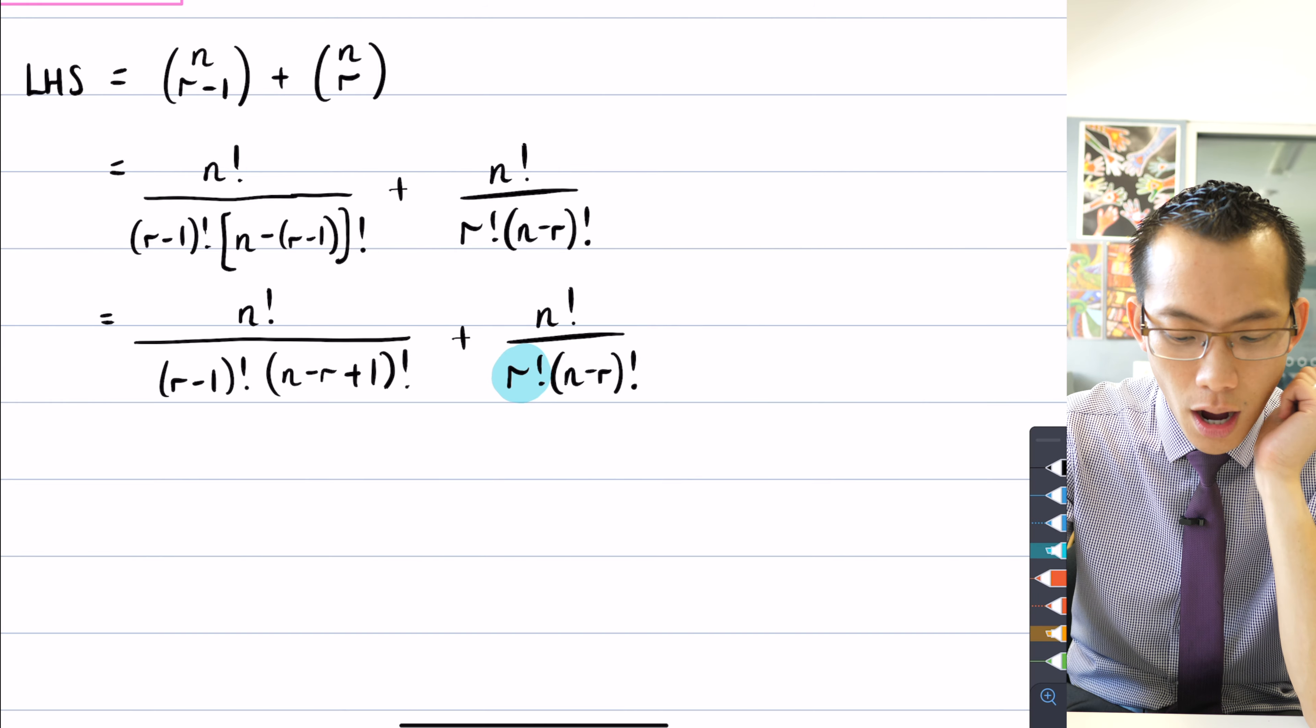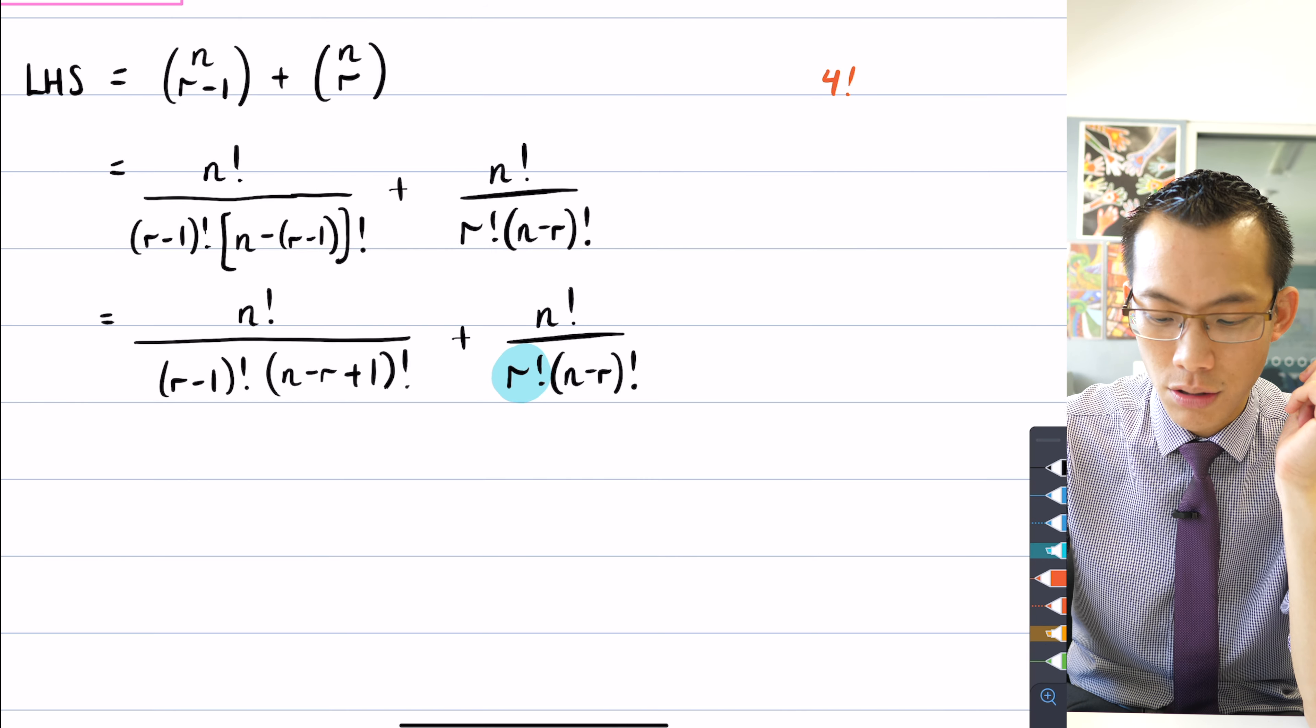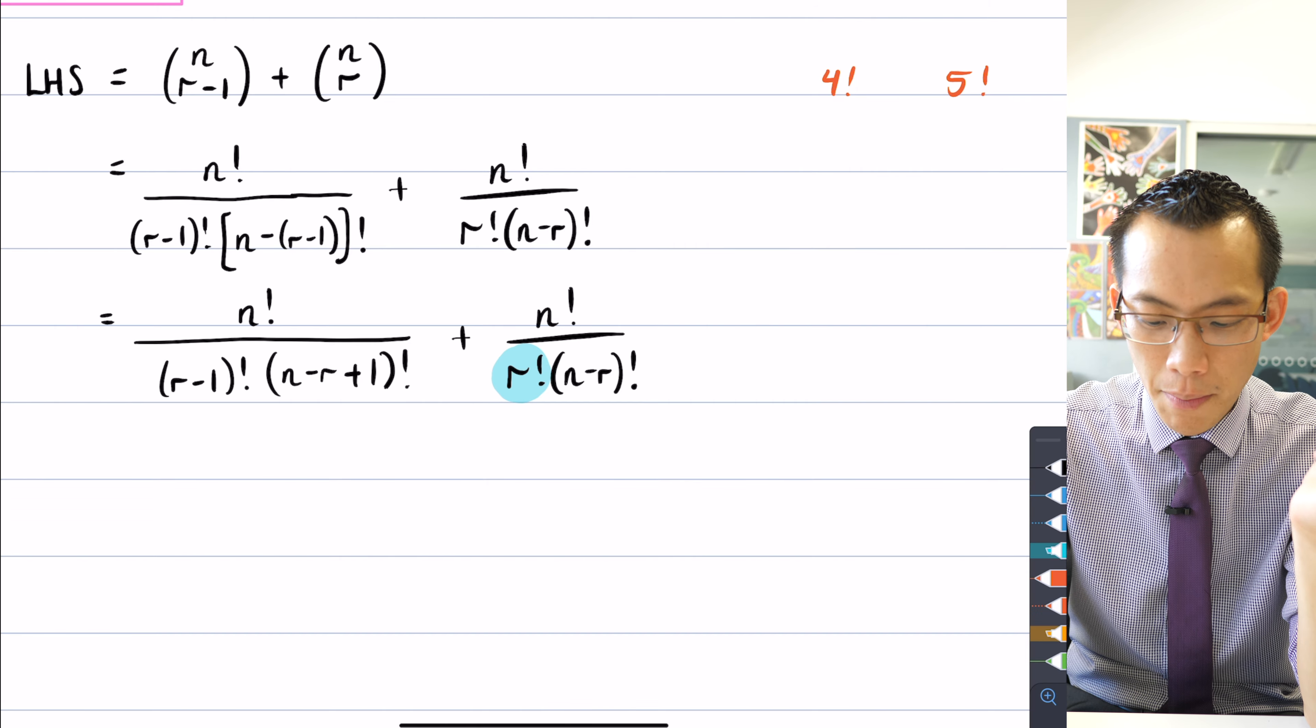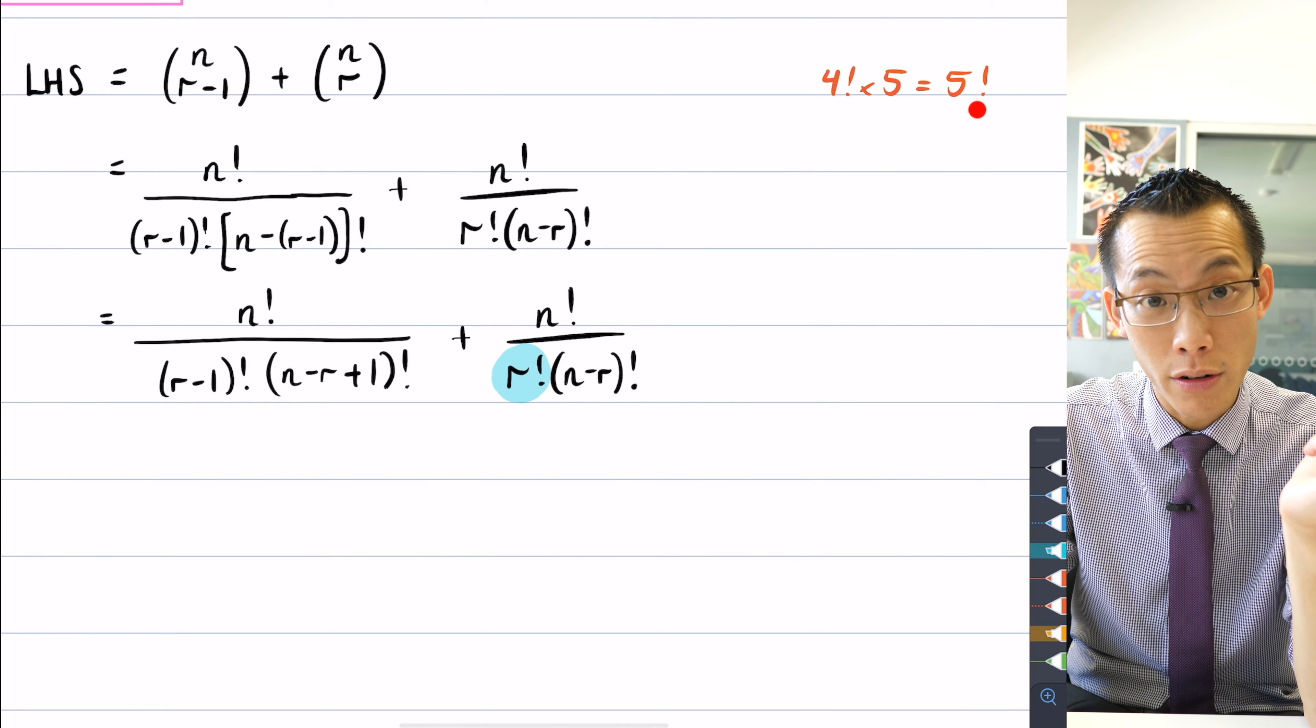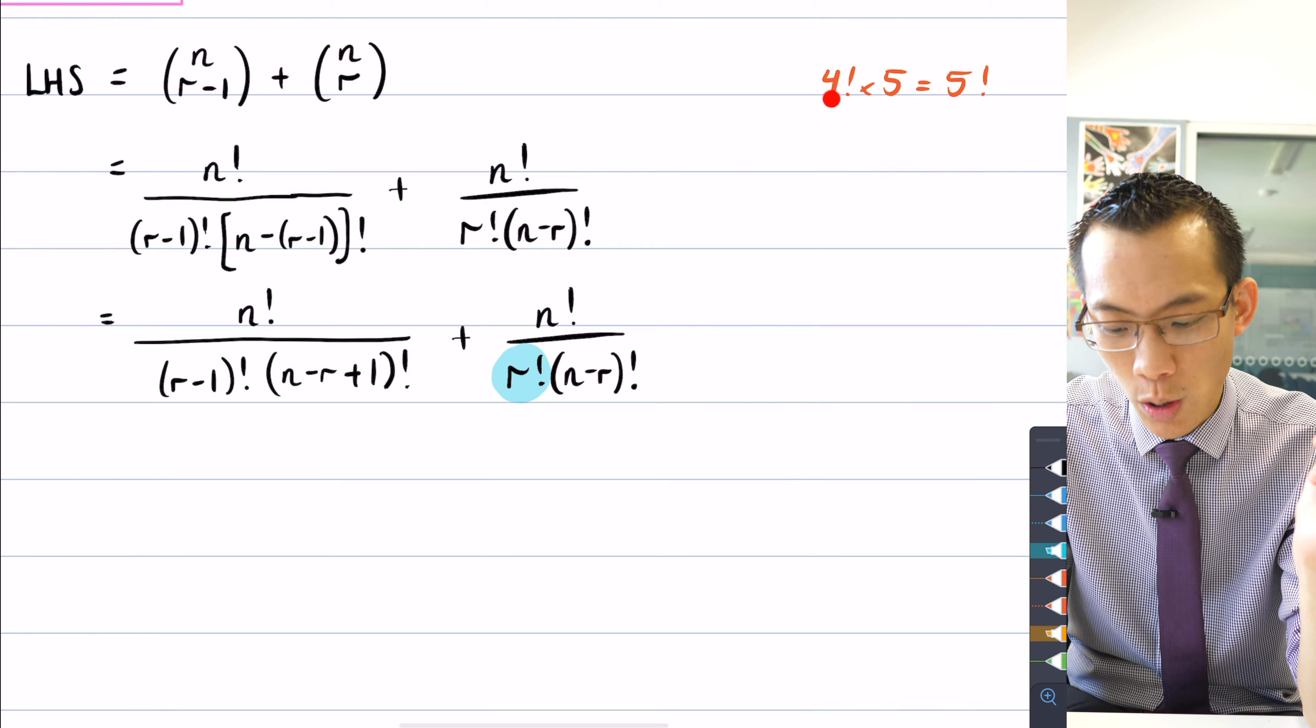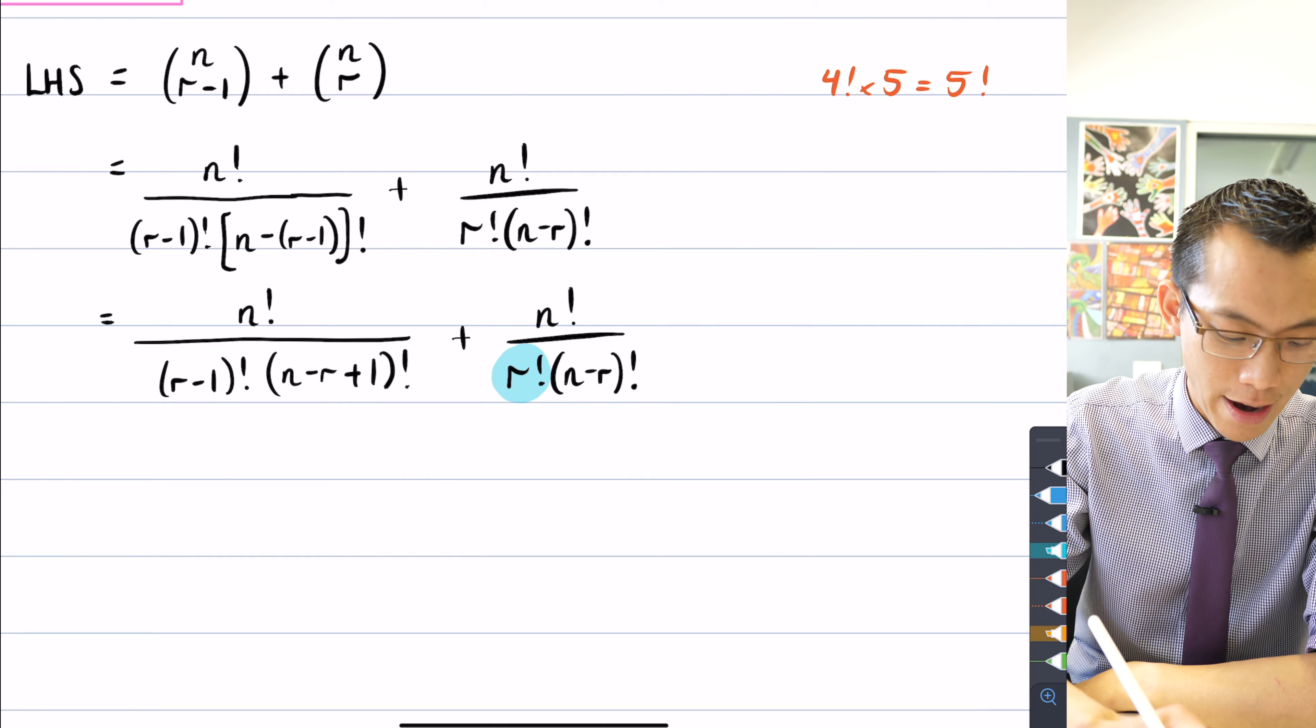For instance, if I said, I've got four factorial and I want to turn it into five factorial. The way that I do that is by multiplying it by the next number along, right? So this is my r factorial, just using an example of five. Here's my r minus one factorial. All I have to do is multiply by r. So that's what I'm going to do on the left-hand fraction.